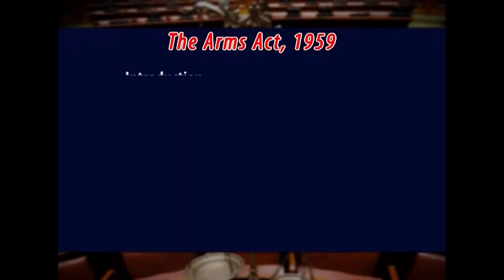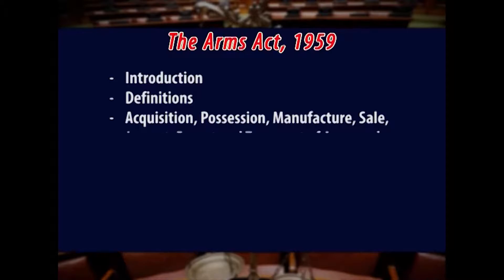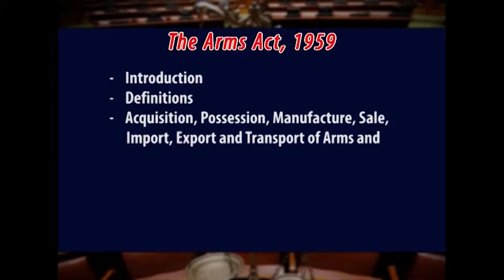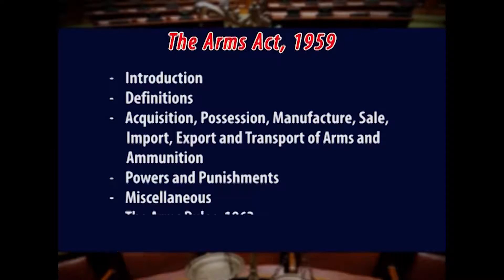This topic is comprising of seven modules. Module 1 talks about introduction. Module 2, definitions. Module 3, regarding acquisition, possession, manufacture, sale, import, export, and transport of arms and ammunition. Module 4 talks about the powers and punishments. Module 5, miscellaneous provisions of the Act. Module 6, the Arms Rules 1962. And Module 7 talks about the conclusion.